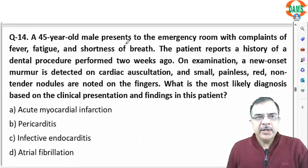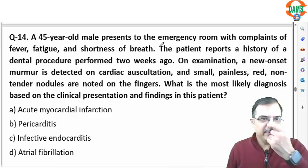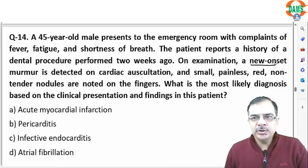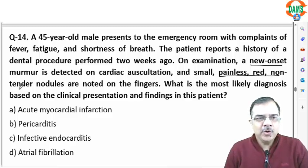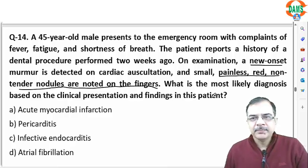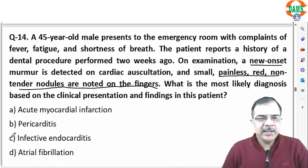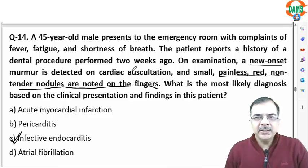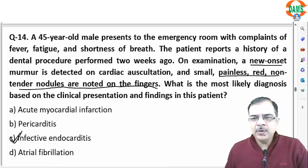Question 14: a 45-year-old male presents to the emergency with fever, fatigue, and shortness of breath. There was a dental procedure two weeks ago, and the patient has a new onset murmur on cardiac auscultation. Painless red non-tender nodules are noted on the fingers. Based on this clinical presentation — new murmur, history of dental procedure as risk factor — the most likely diagnosis is infective endocarditis.